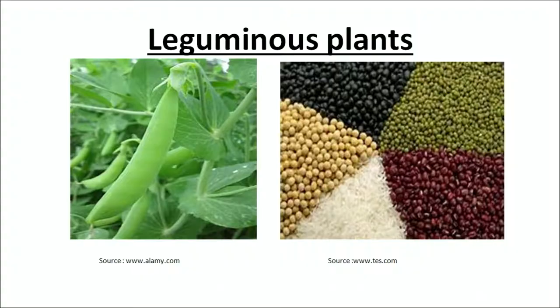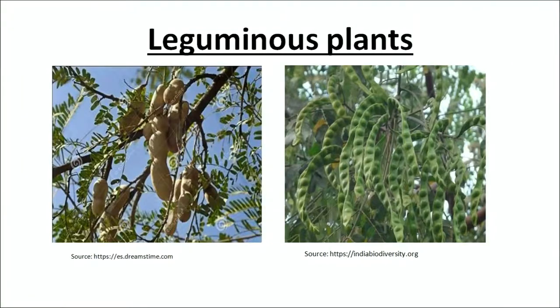Talking about leguminous plants, you can see the most familiar examples. The pea plant is a best example of a legume. Pulses such as rajma, chana, groundnut, and all kinds of beans are examples of leguminous plants.